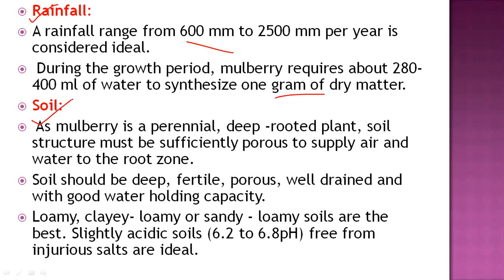Regarding soil properties, mulberry is a perennial crop and a deep-rooted plant, so the soil structure must be sufficiently porous to allow proper supply of air and water to the roots. The soil should be deep, fertile, porous, well-drained, and with good water-holding capacity. Loamy, clay loamy, and sandy loamy soils are best for proper growth of the mulberry plant. Slightly acidic soil is acceptable, but it should be free from injurious salts.